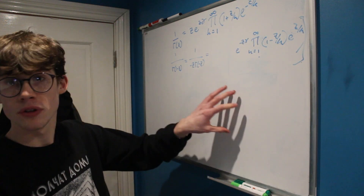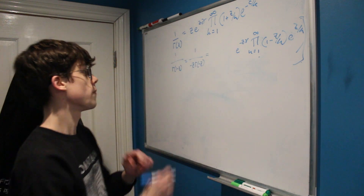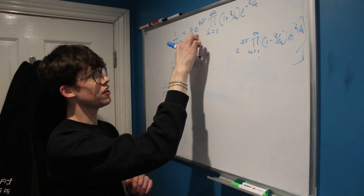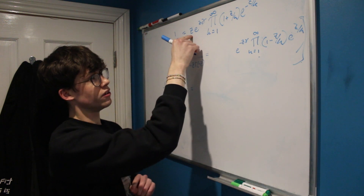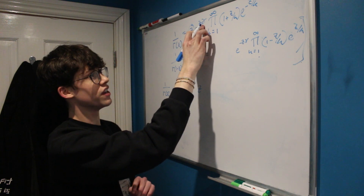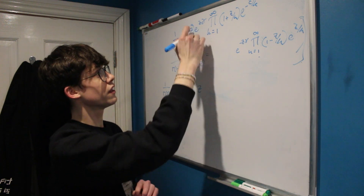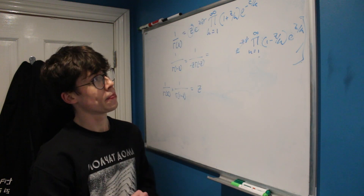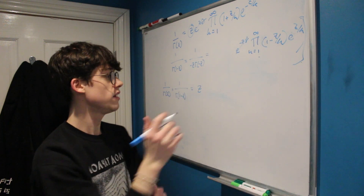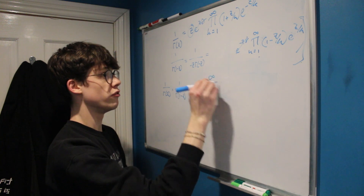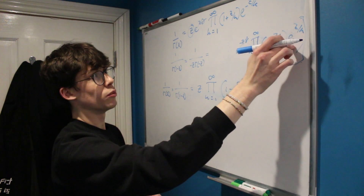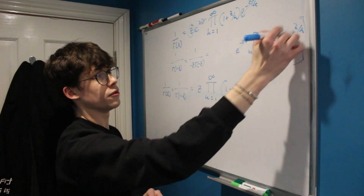Our main goal is to multiply the two expressions together. So 1 over gamma of z times 1 over gamma of 1 minus z: the e to the z times Euler-Mascheroni constant and e to the negative z times Euler-Mascheroni constant are reciprocals and cancel. The infinite products give 1 plus z over k and 1 minus z over k, a difference of two squares, yielding 1 minus z squared over k squared. The exponential factors e to the z over k and e to the negative z over k also cancel.